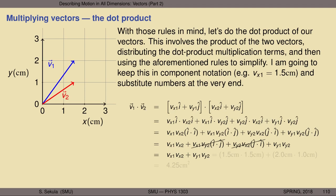The x-components of v1 and v2 are both 1.5 cm, and the dot here now represents plain old scalar multiplication. The y-component of v1 is 2 cm and the y-component of v2 is 1 cm. Doing all the math, the dot product of v1 and v2 equals 4.25 centimeters squared.